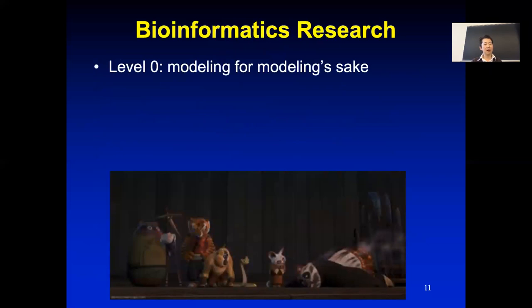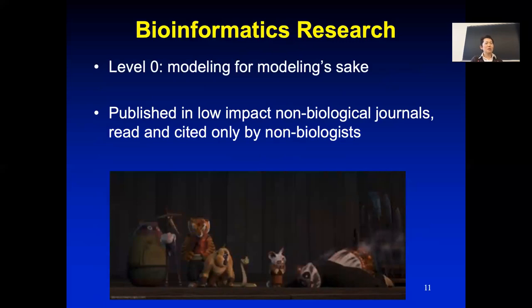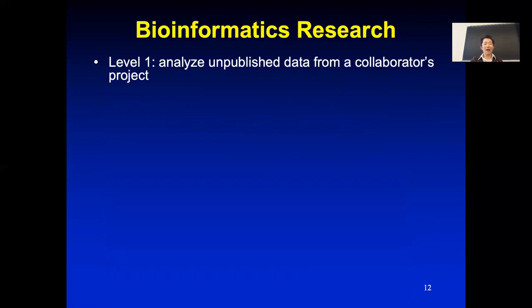In the very first class we showed you different levels of bioinformatics research. Level zero bioinformatics is modeling for modeling's sake — creating a problem for its own sake. These are published in low-impact non-biological journals and cited only by non-biologists; they create problems that very few biologists even care about. We're hoping you don't do this in your research.